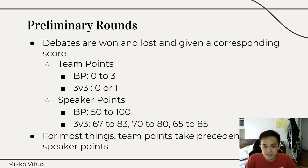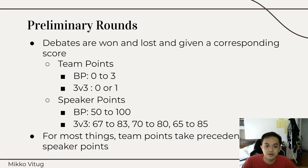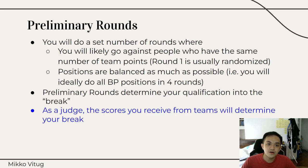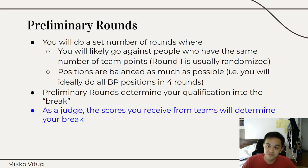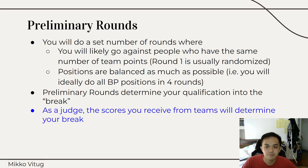Note that for most things, team points take precedence over speaker points, meaning in a ranking you are ranked by team points first, and then to break ties, speaker points come next. In preliminary rounds, you will do a set number of rounds where you will likely go against people who have the same number of team points. Round 1 is normally randomized because there are no points yet. So if you are at 7 points, your opponent more often than not will also be at 7 points — sometimes at 6, sometimes at 8, but usually at most plus or minus 1.